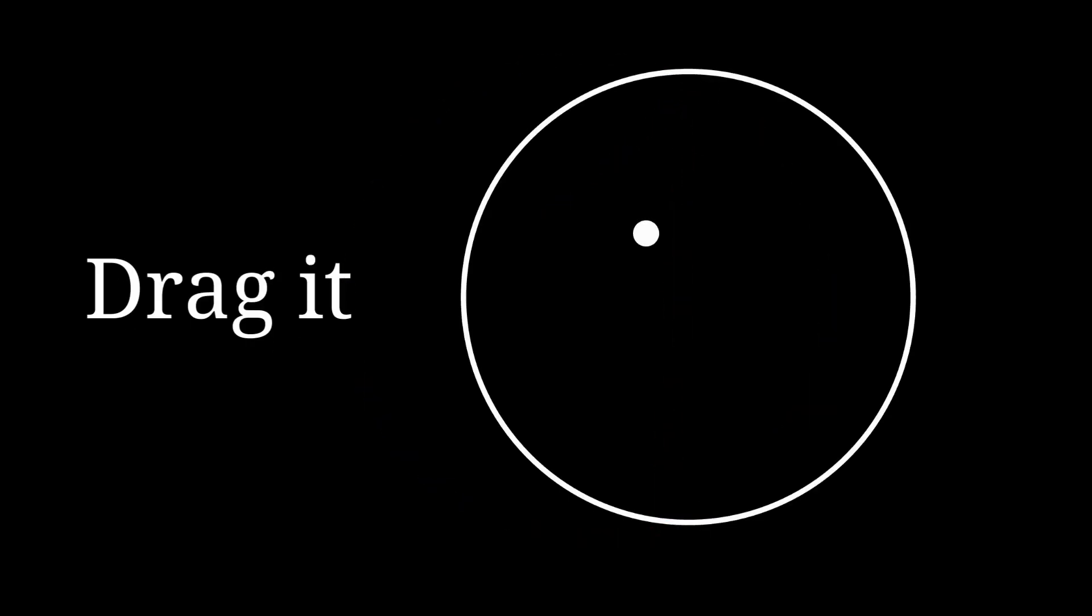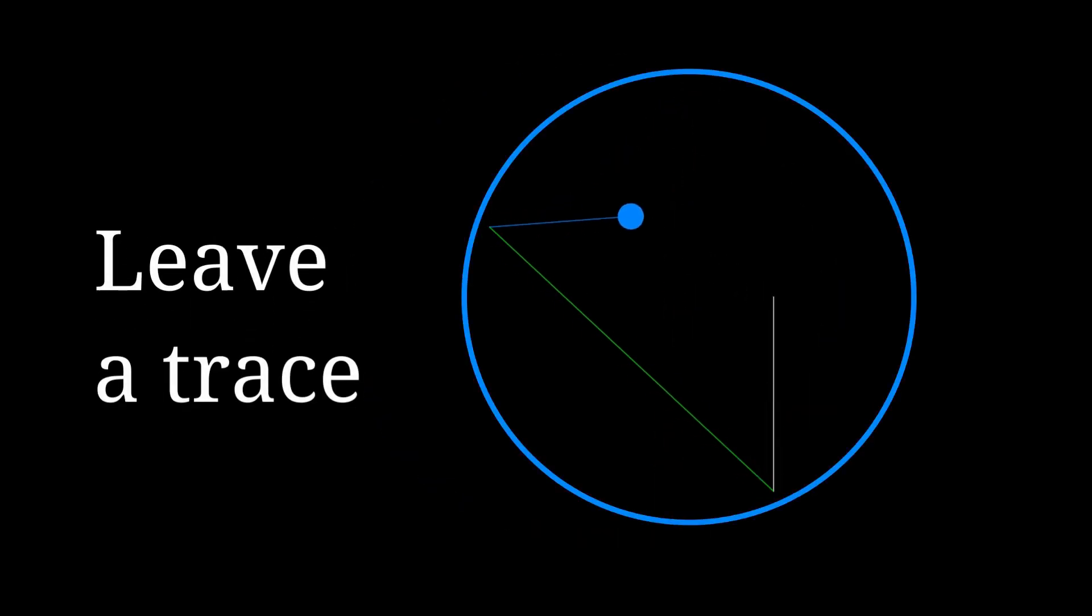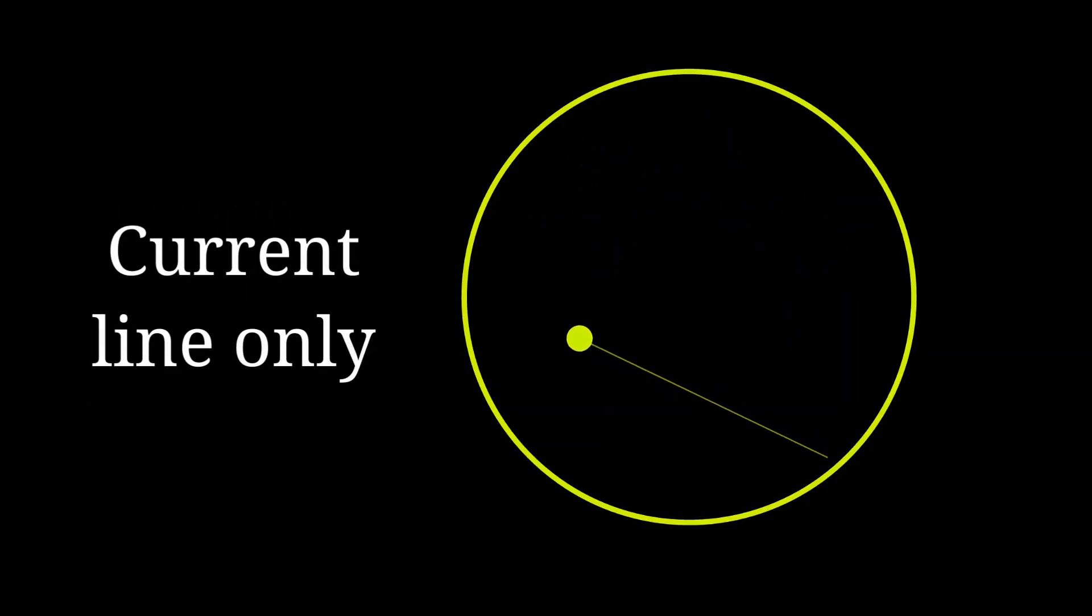Hi, I'm excited to share this Desmos link ball bouncing animation. Here's what you can customize: drag the ball anywhere in the circle and start, choose to leave a trace or show only the current line.